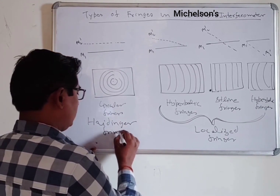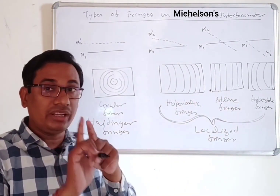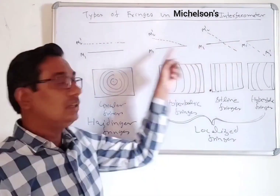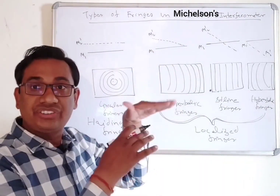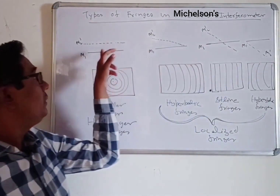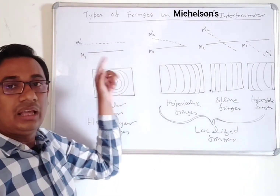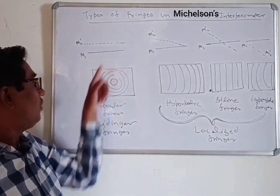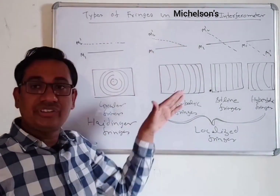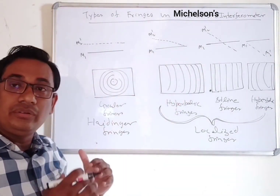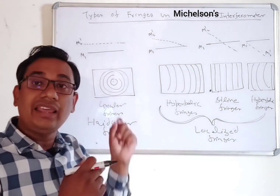Haidinger fringes are an example of equal inclination. The other fringes — where the air film forms a wedge shape — are parallel fringes with equal thickness between the air film. The inclination is important for circular Haidinger fringes, while the wedge-shaped fringes are produced by equal thickness and are fully localized.